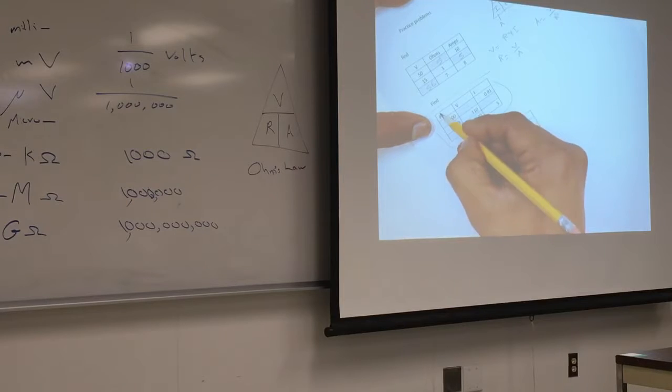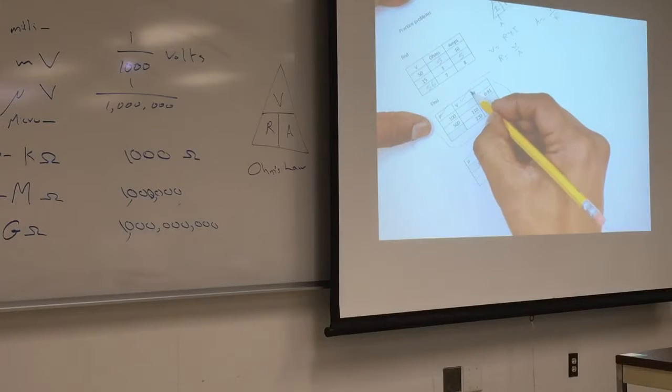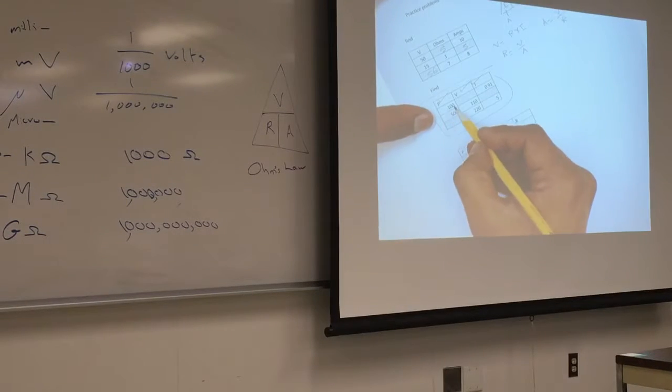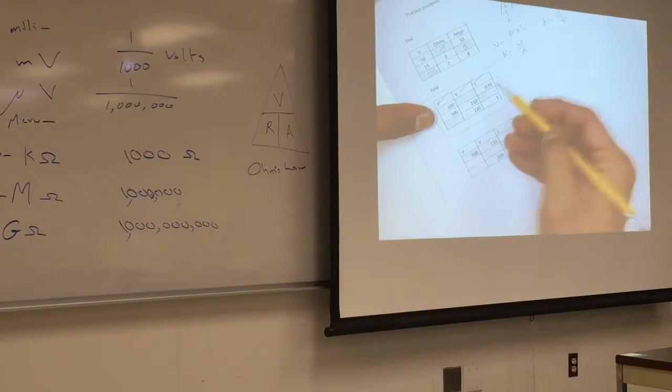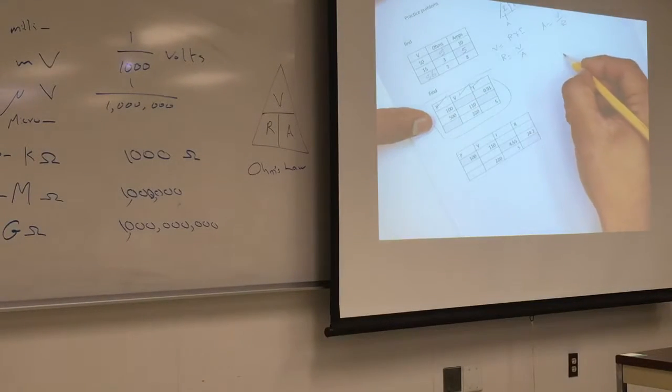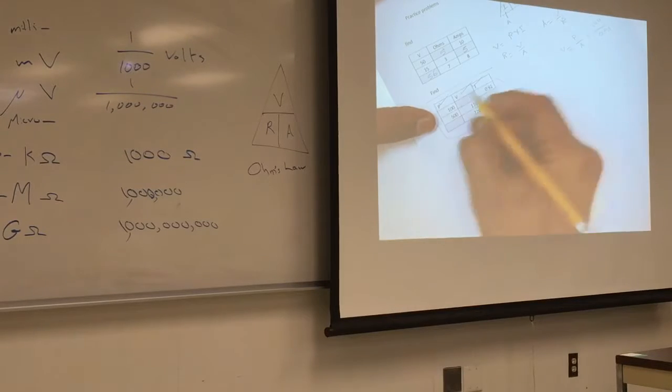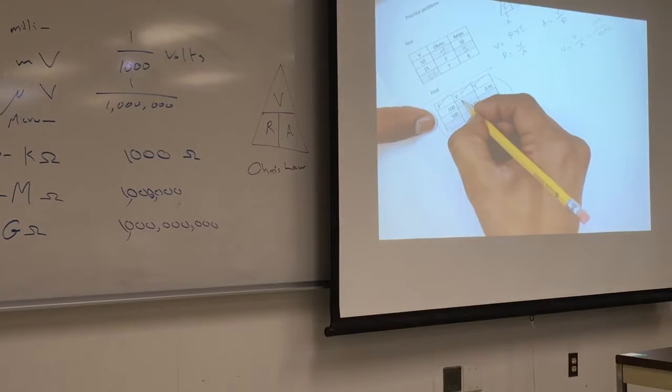What about here? So this is going to be the power law. I see power, voltage, and current. 100. So if I want to find the voltage, I have the power and the current. What do I do? Voltage equals power over current, A or I. So that equals 100 over .91. What do I get? 109.